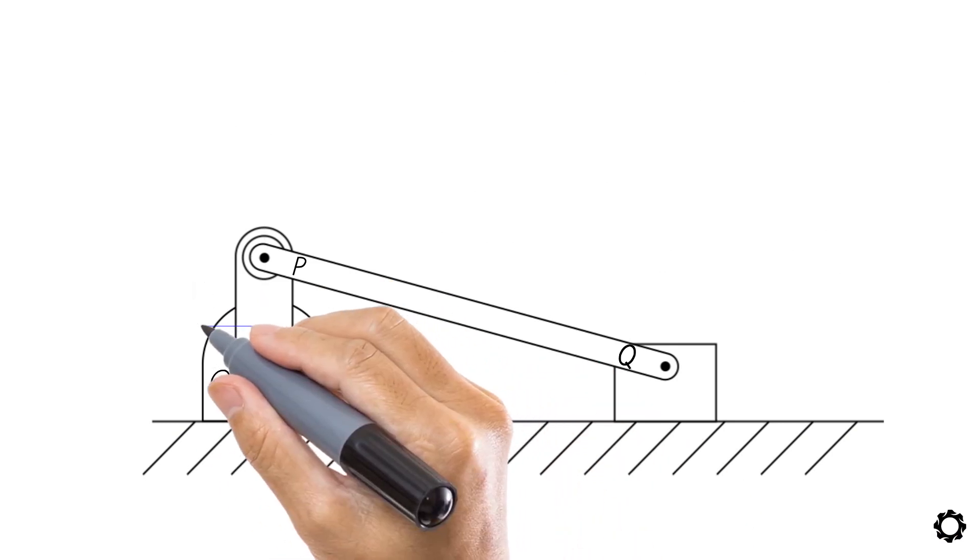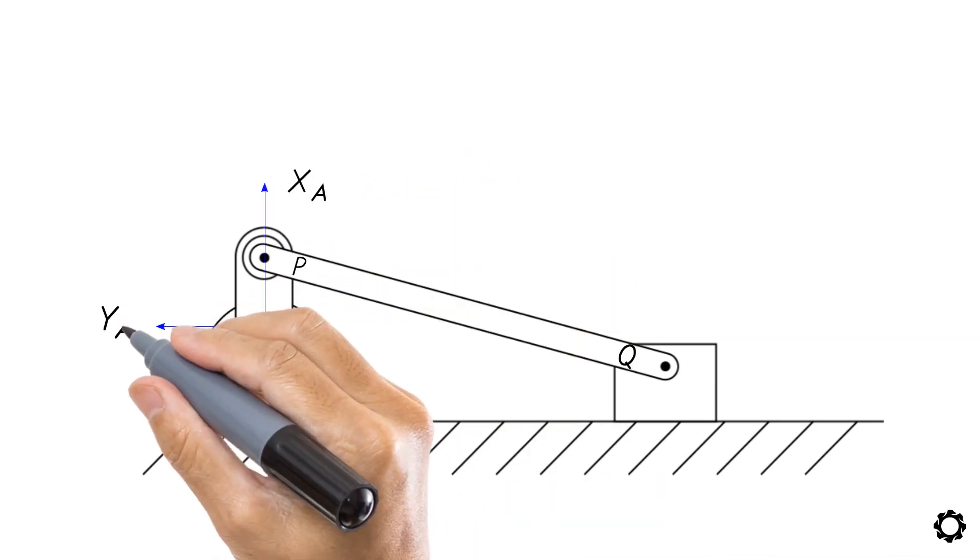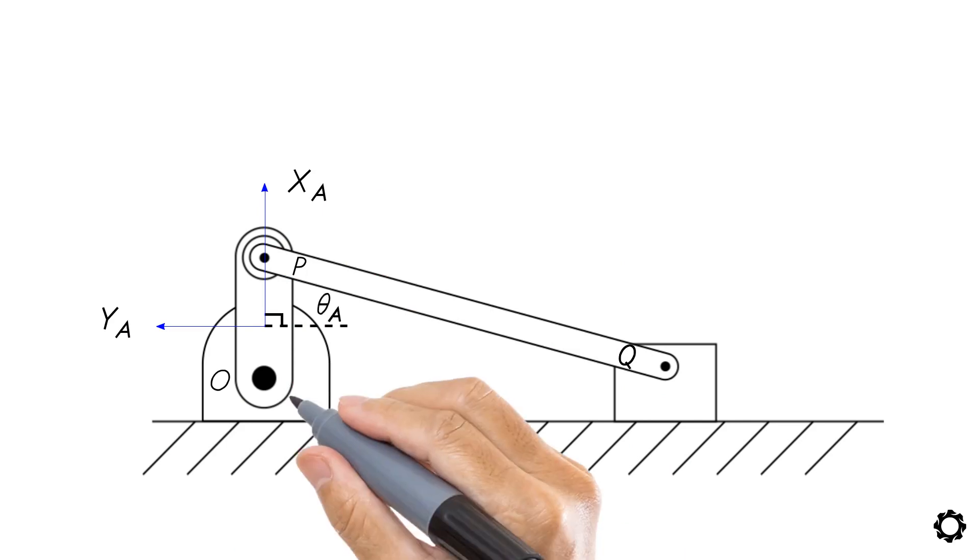For the crank, let's add a body reference system located at the center of the crank with the x-axis aligned with the body's longitudinal axis. In this case, let's make the crank body A.